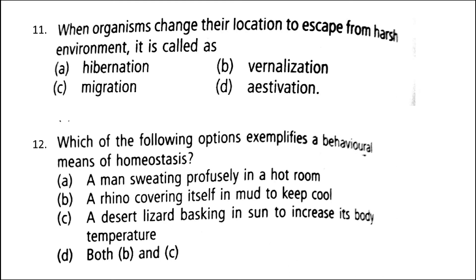Next: when organisms change their location to escape from a harsh environment, it is called — the answer is option C: Migration. The seasonal movement of a complete population of animals to a more favorable environment is called migration. It is usually in response to uneven precipitation and lower temperatures resulting in a reduced food supply, and is often triggered by a change in day length. Migration is common in mammals, eels, salmon, and some insects, but is most marked in birds.